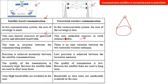In satellite communication, timing is invariant between communicating satellites, whereas in terrestrial wireless communication there is no time variation between the two terrestrial antennas. Precision is achieved accurately in satellite communication, while there is less precision between terrestrial antennas.